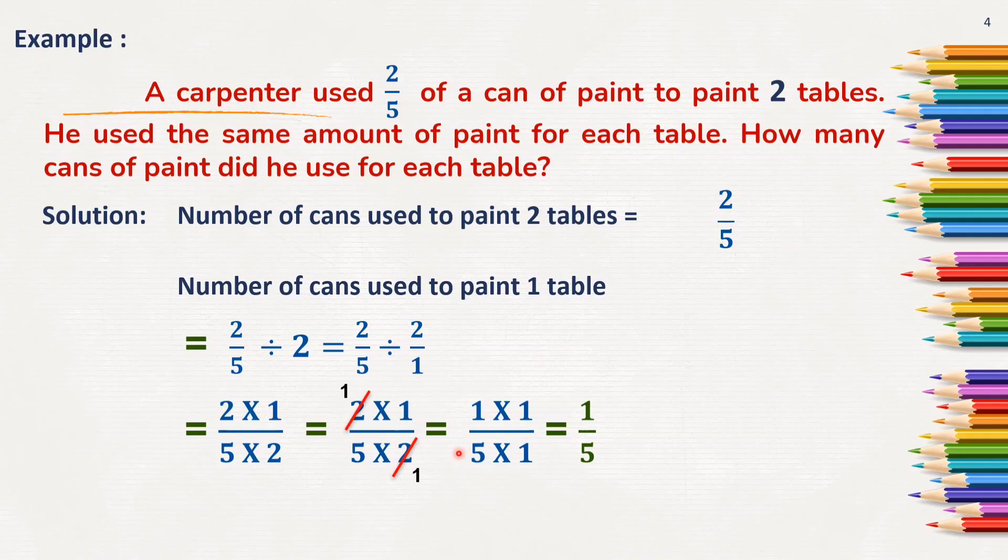So, here 1 into 1 and 5 into 1. So, 1 into 1 is 1, 5 into 1 is 5. Therefore, 1 by 5 of a can was used to paint each table.